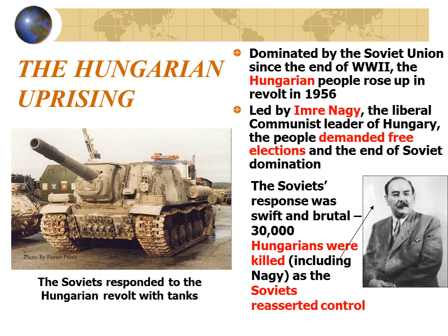Dominated by the Soviet Union since the end of World War II, the Hungarian people rose up in revolt in 1956. Led by Imre Nagy, the liberal communist leader of Hungary, the people demanded free elections and an end to Soviet domination. The Soviet response was swift and brutal: 30,000 Hungarians were killed, including Nagy, as the Soviets reasserted control. The United States could have come to the aid of free peoples as the Truman Doctrine said it would — but it did not. This proves the Truman Doctrine is in a sense a farce, an illusion that allows for massive expansion of American military spending and the denial of American civil liberties, in exchange for nothing.